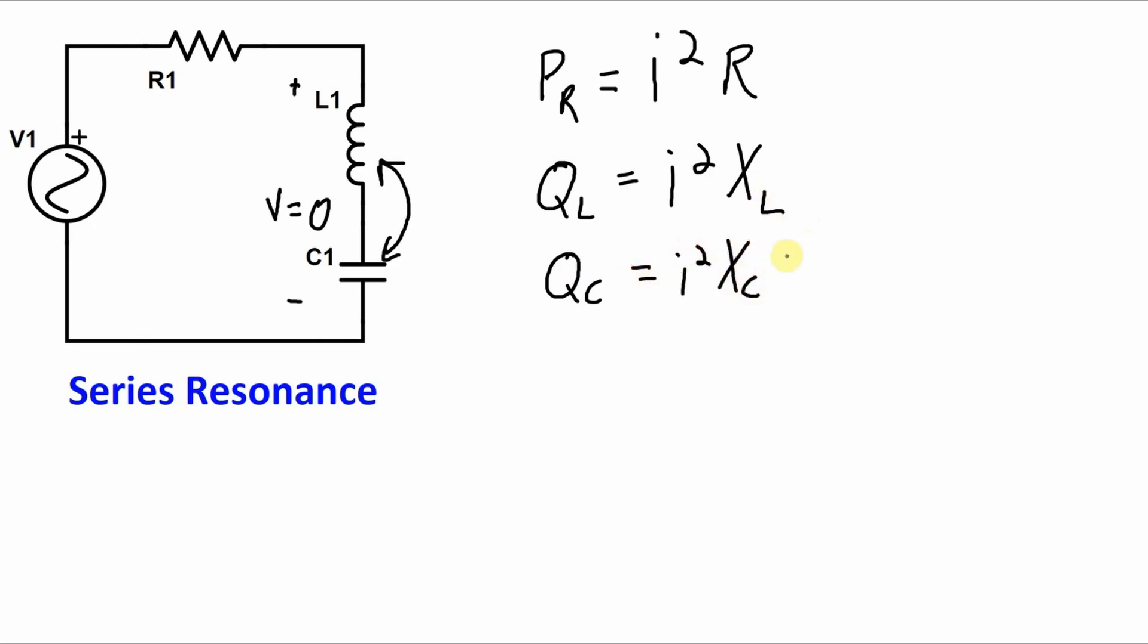Now in resonance, again, XL is equal to XC. So that means that this QL is equal to QC, but they are opposite of each other. So while the inductor is absorbing power, the capacitor is releasing power and vice versa. And since those values are exactly equal to each other, what we have is the power is just bouncing back and forth between inductor and capacitor.